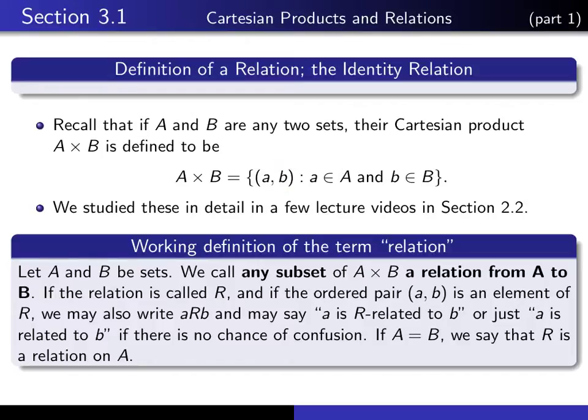If A and B are any two sets, then any subset of the Cartesian product A cross B is referred to as a relation from A to B.